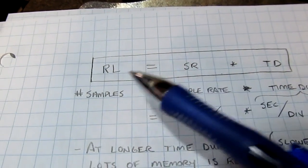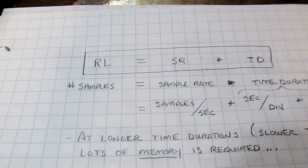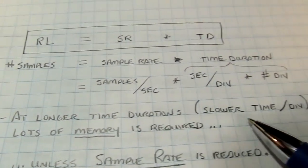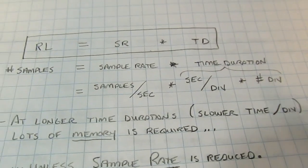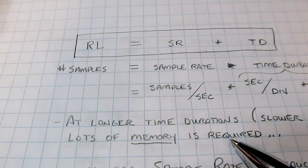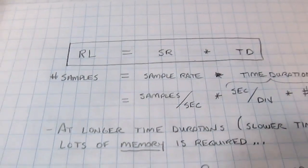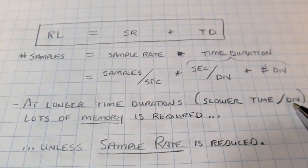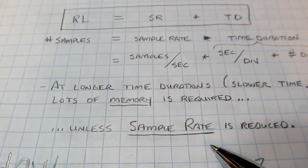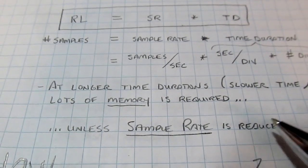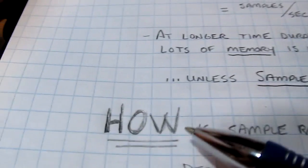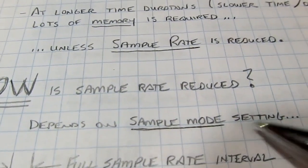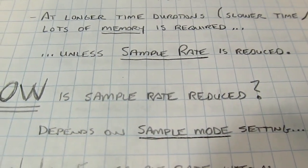Every manufacturer is going to give you different controls for managing this. At longer time durations — slower time per division settings — a lot of memory is required for a given sample rate. So normally at slower time-base settings the sample rate is reduced. The key question is how, and that really comes down to something called the sample mode in most digital oscilloscopes.